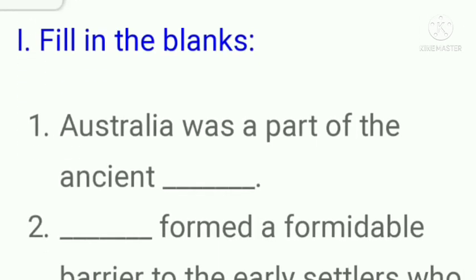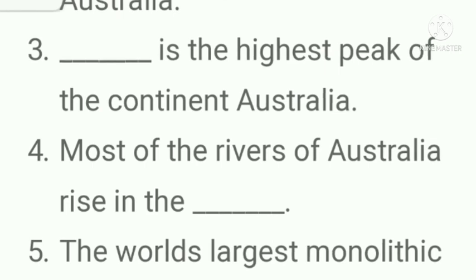Here are the additional question answers of the lesson Australia. Fill in the blanks: Australia was a part of ancient Gondwana Land. The Great Dividing Range formed a formidable barrier to the early settlers who reached the eastern coast of Australia. Mount Kosciuszko is the highest peak of the continent Australia. Most of the rivers of Australia rise in the Eastern Highland. The world's largest monolithic rock is Ayers Rock.